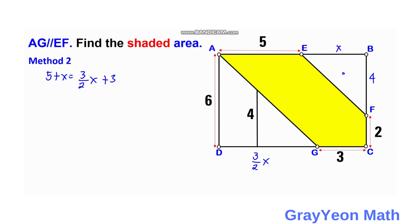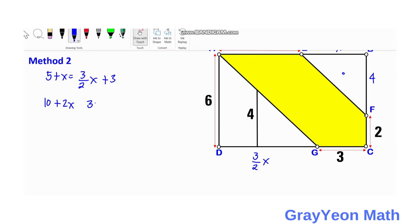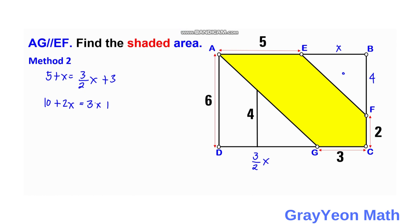Multiplying all by 2, we have 10 plus 2 X equals 3 X plus 6. So we have 3 X minus 2 X is X. And then minus 6 is equal to 4. So X is 4.